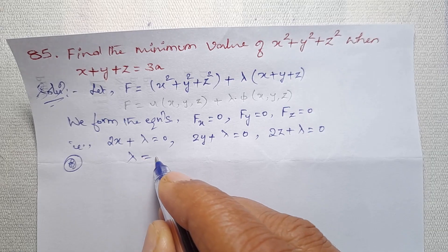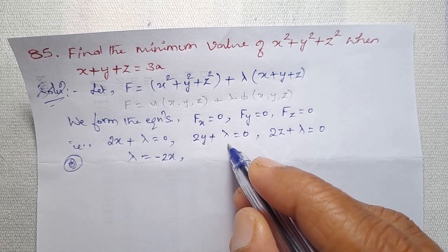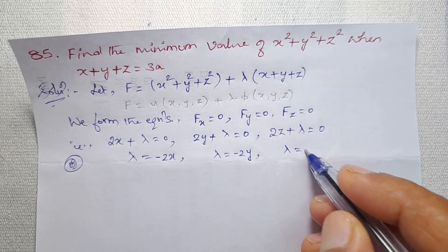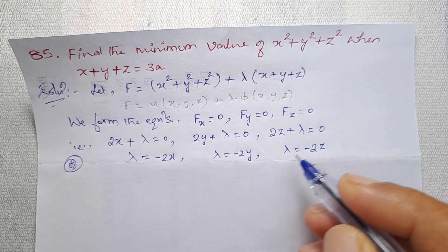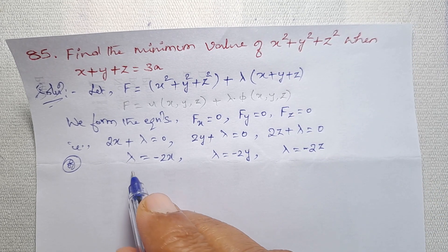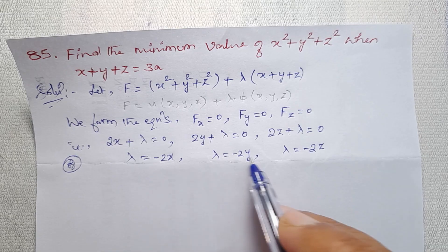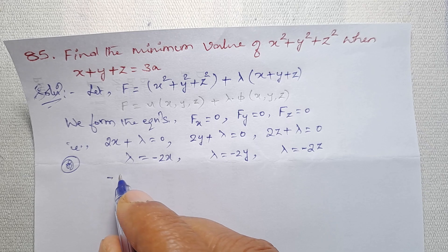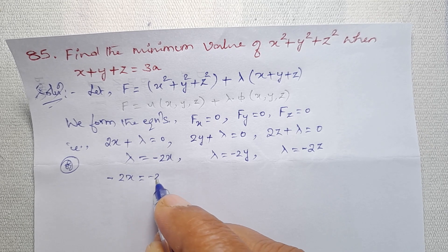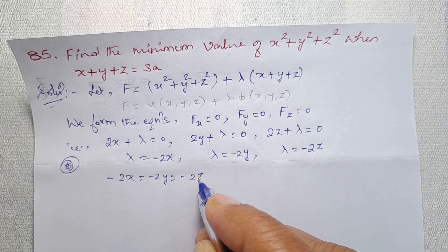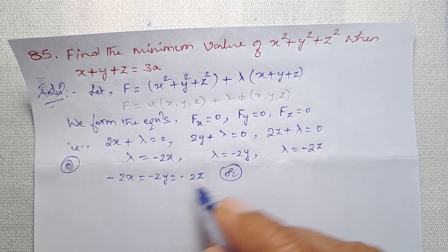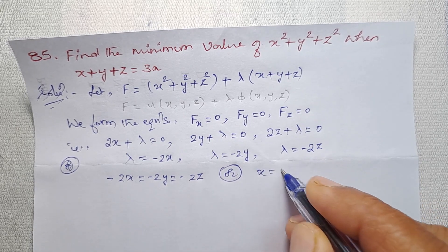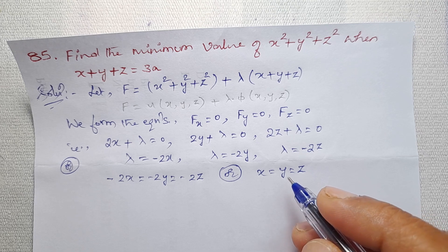From these equations: λ = −2x, λ = −2y, and λ = −2z. Since λ is constant, we have −2x = −2y = −2z. Cancelling −2 from both sides gives x = y = z.